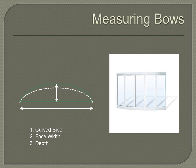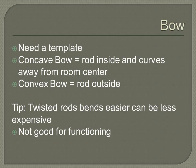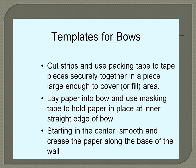For bow windows, you need the curved side measure, the face width, and the depth, and you'll also need a template. There are two types: a concave bow where the rod is inside and curves away from the center of the room, or a convex bow where the rod is on the outside and comes into the center. When choosing drapery hardware for bows, twisted rods bend more easily and can be less expensive with a nice decorative touch. However, for functioning treatments on bows, use a fascia style with tracks or an iron piece with a track on the back that can be bent.